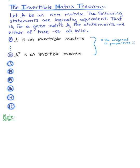So here we go. Let's let matrix A be a square n by n matrix. And the following statements are all logically equivalent, meaning that they're all either true or they're all false.